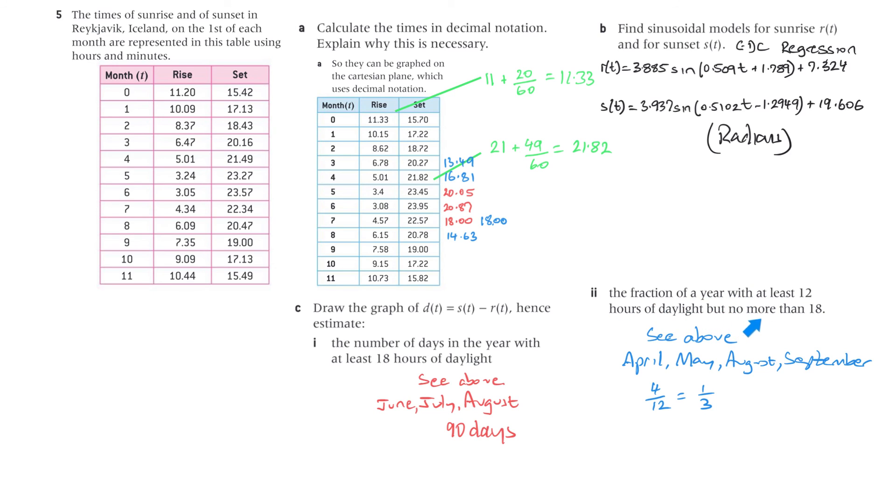Two, the fraction of a year with at least 12 hours of daylight but no more than 18. So I've used blue here. Well that's more than 12, the difference is more than, that's less than 12, so that's more than 12, more than 12. That's greater than 18 so we can't include that, that's greater than 18, that's equal to 18, that's okay, no more than 18. So we've got these ones, we've got this one, this one, that one and that one. So that is four of them and that would be April and May and August and September. And that's four months of the year, so it's four on 12 which is one on three.